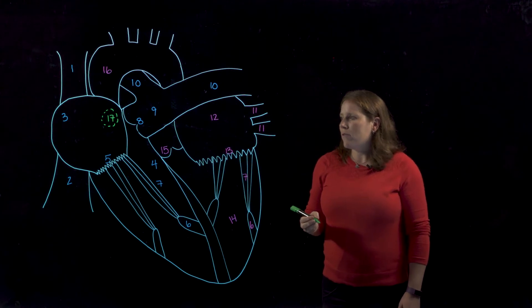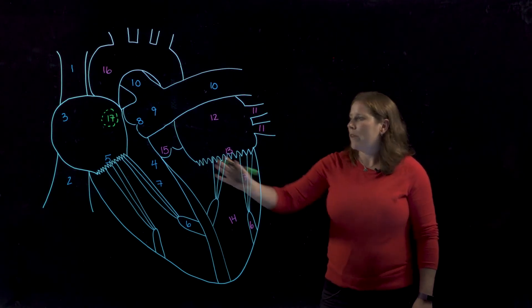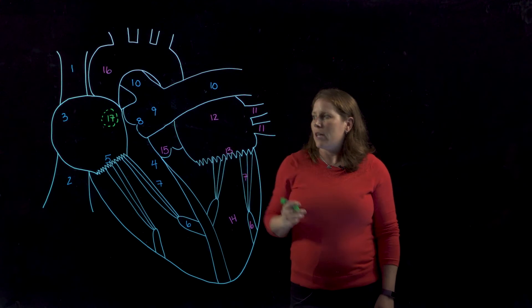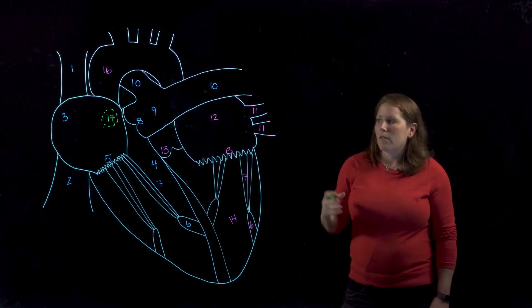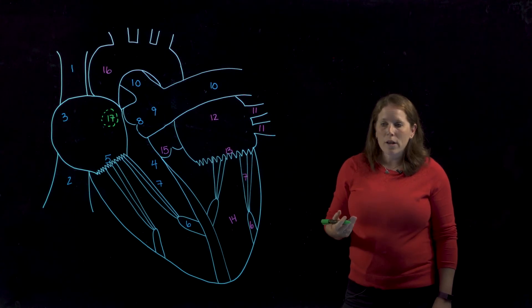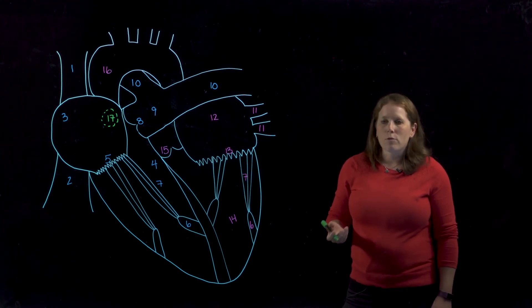And the fossa ovalis is a remnant from fetal circulation when the right atrium and left atrium had a direct continuation. So in the fetal heart that depression is actually an opening or a hole and it's called the foramen ovale.